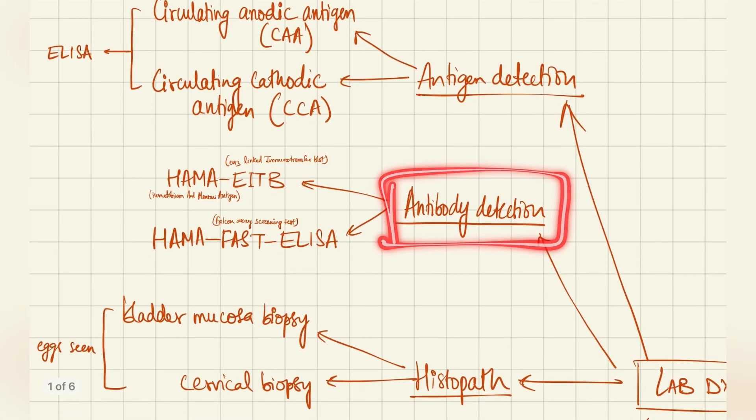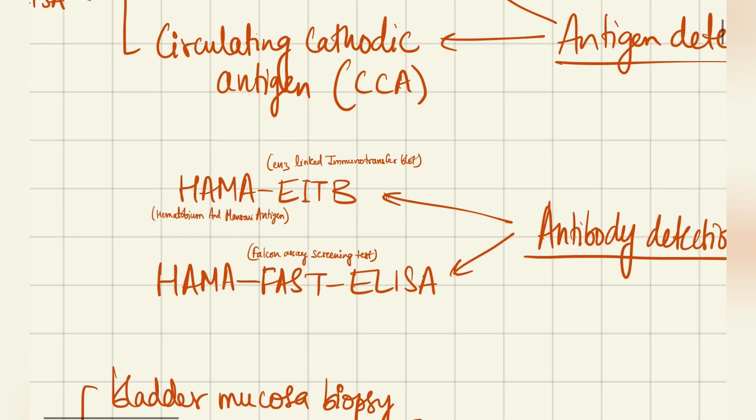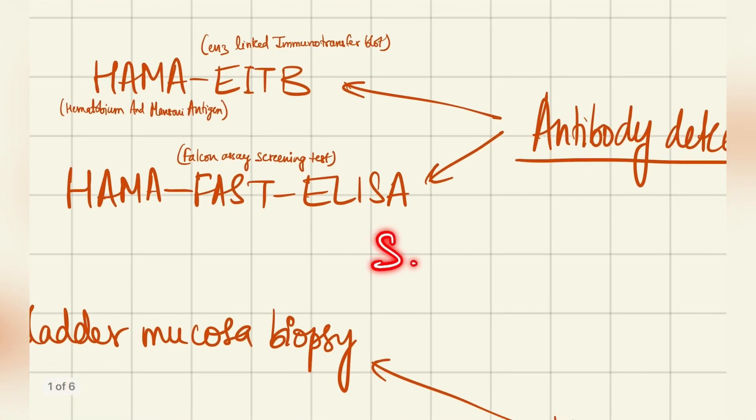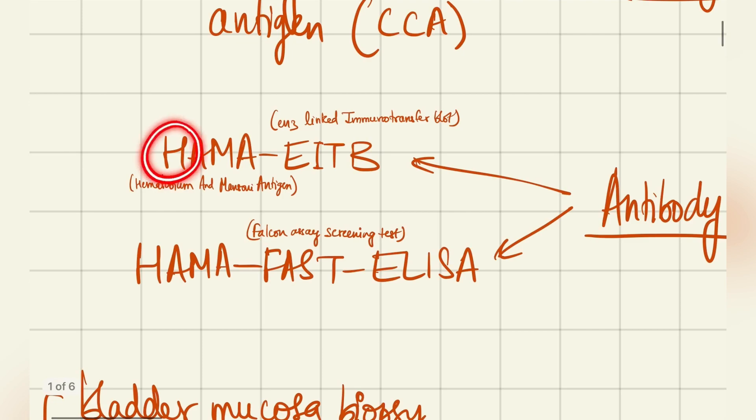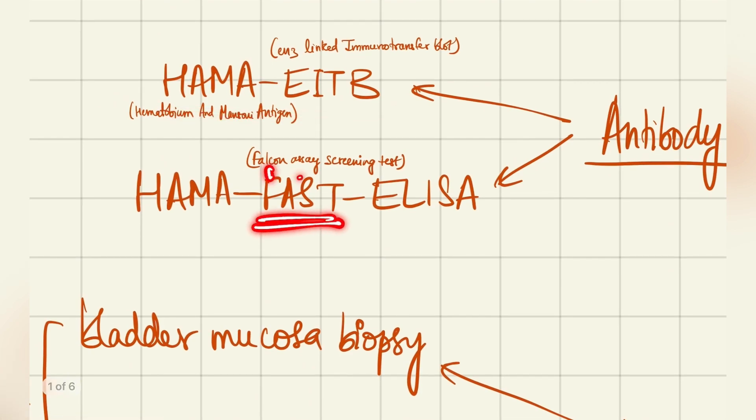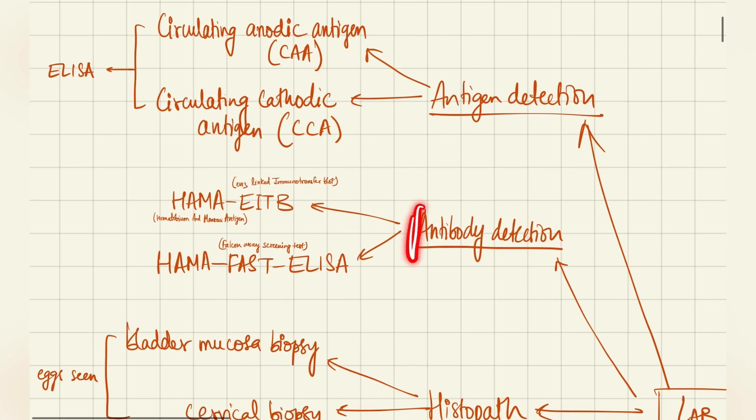Coming to the antibody detection, we have two methods: the HAMA EITB and HAMA fast ELISA. These are the two techniques. HAMA is the haematobium and Mansoni antigen, which are the two species. There's also Schistosoma haematobium and Schistosoma mansoni. These are the two organisms. So this is the haematobium and Mansoni antigen, and EITB stands for enzyme linked immunotransfer blot. So this is HAMA EITB and HAMA fast ELISA. FAST stands for the Falcon Assay Screening Test. You don't need to remember the full forms, but you do need to mention that antibody detection is by HAMA EITB and HAMA fast ELISA.